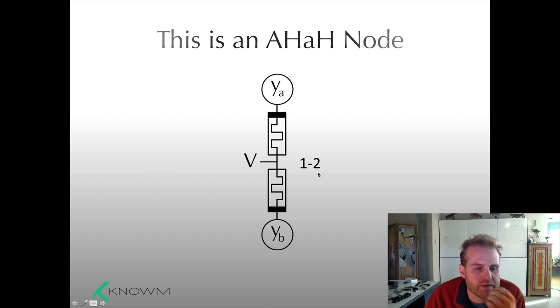This is a 1-2 configuration. Your input is applied here and you measure differential output currents on YA and YB. So there's multiple AHA node configurations.